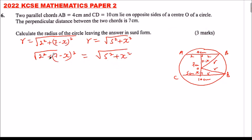We square both sides to get rid of the square root sign. 2 squared is 4. When you open the bracket (7 minus x) squared, you get 49 minus 14x plus x squared. This equals x squared plus 25.